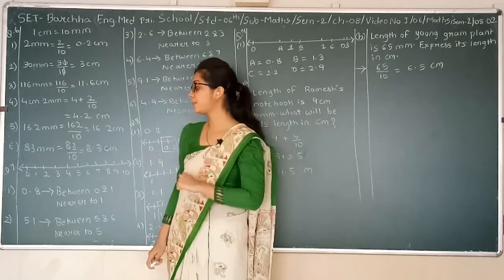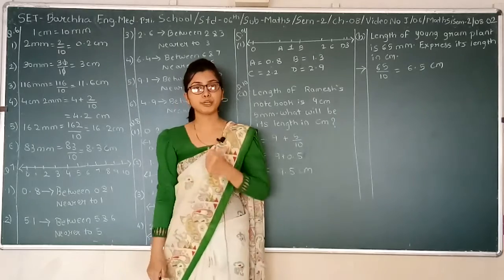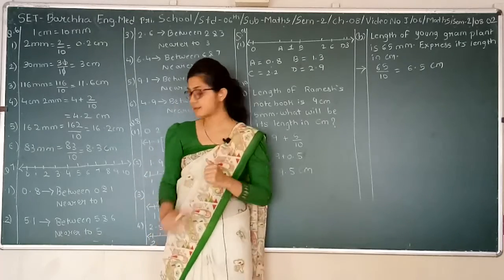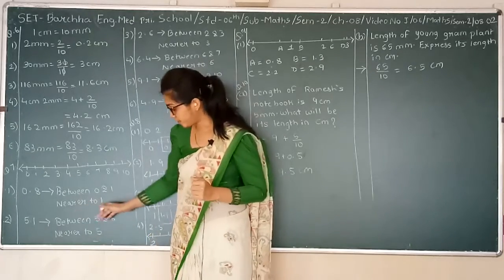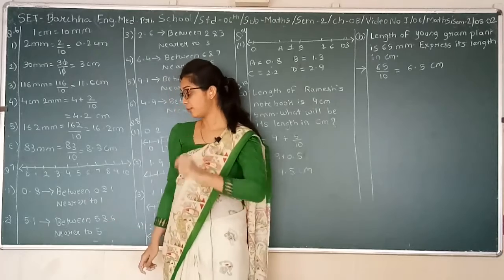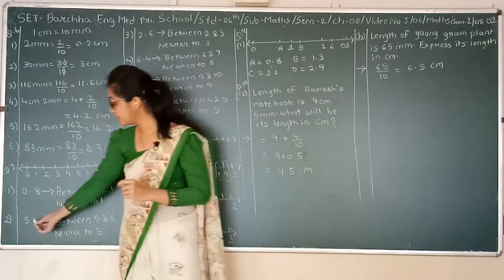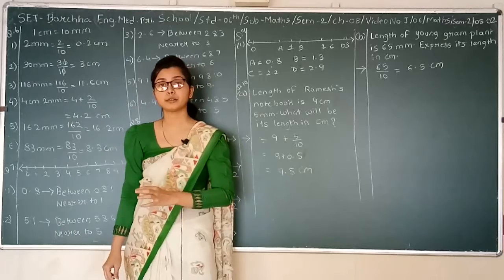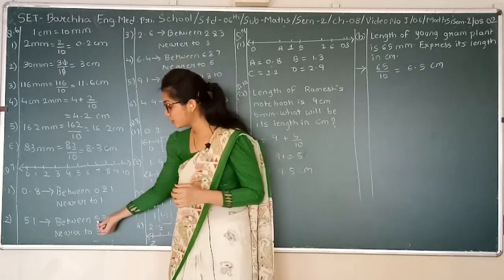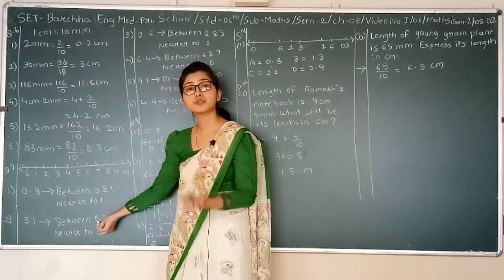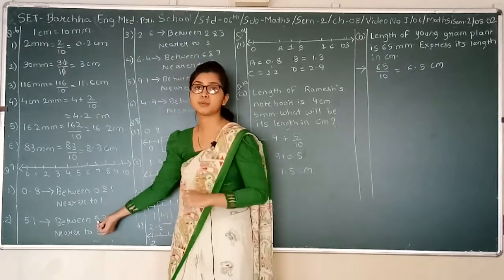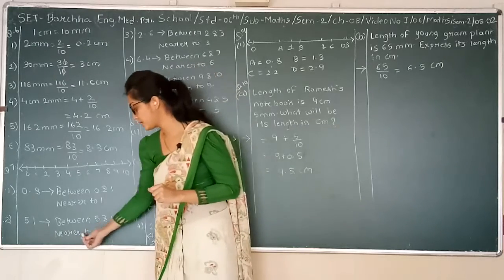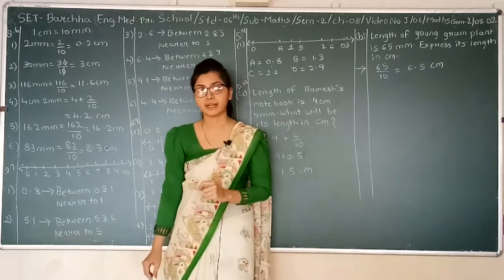Next one: 5.1. Now 5.1 will be between 5 and 6. Since 0.1 is less than 0.5, it will be closer to the smaller number, which is 5 in our case. So the answer will be nearer to 5.